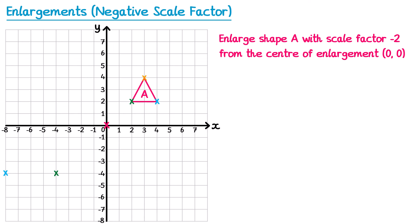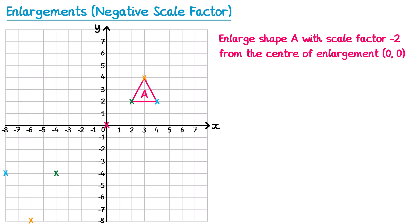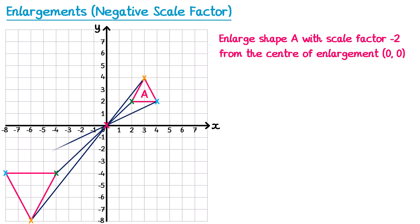For the final point at the top of the triangle — the orange cross — from the center it's 3 right and 4 up. The opposite journey is 3 left and 4 down, done twice for scale factor negative 2. I connect up the points to form the enlarged shape, which is 2 times as large but flipped upside down. To verify, I draw straight lines connecting matching colored crosses through the center of enlargement — they should form perfect straight lines. All three pairs form straight lines, confirming the shape is correct.